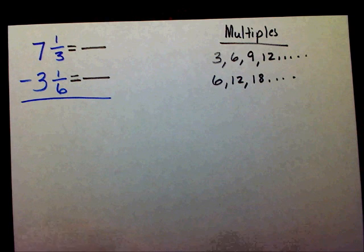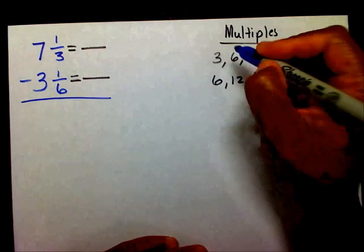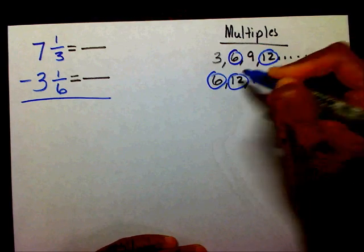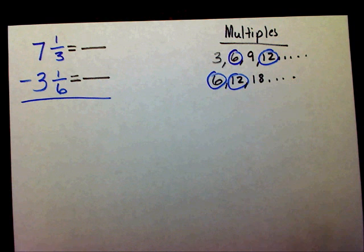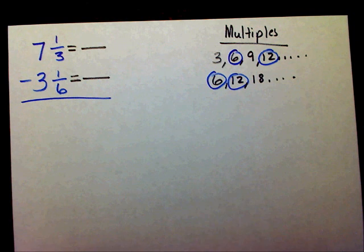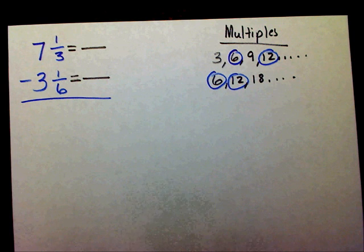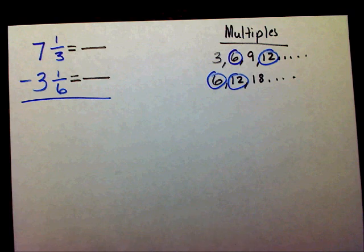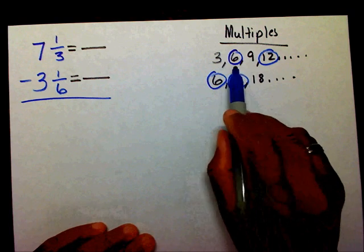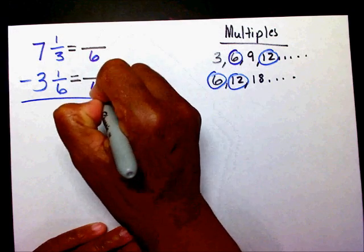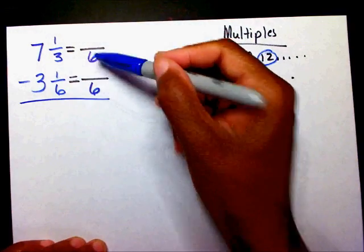Well, what multiple do they have in common? They have 6's, and they both have 12's. But what I want to know, the lowest common multiple. Some people say the least common multiple. Lowest common multiple, least common multiple, same thing. The least common multiple is going to be 6. So that's going to be my new denominator. So I'm going to write that in for my denominator.